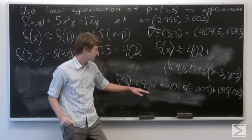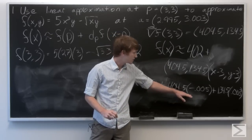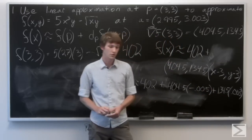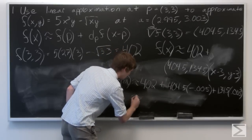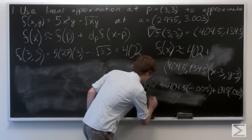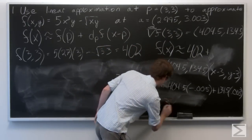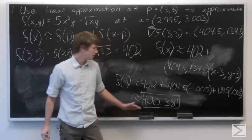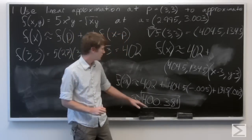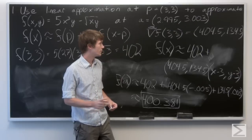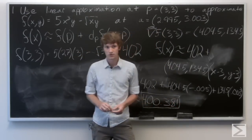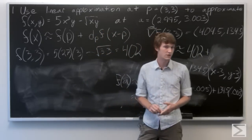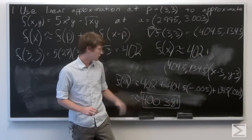Plugging in a equals (2.995, 3.003), we get f(a) approximately equals 402 plus 404.5 times negative 0.005 plus 134.5 times 0.003. Computing that, f(a) is approximately 400.381. So the linear approximation of f at p equals (3, 3), approximating a equals (2.995, 3.003), is about 400.381.